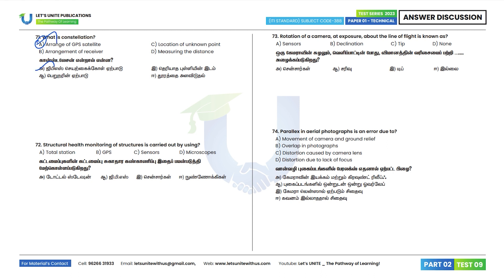Question 72: Structural health monitoring of structures is carried out by using sensors. Option C is the correct answer. Structural health monitoring is of two types: passive SHM and active SHM.